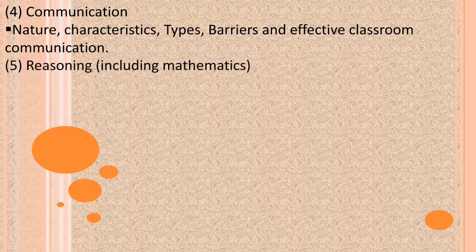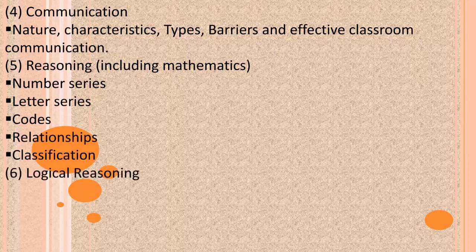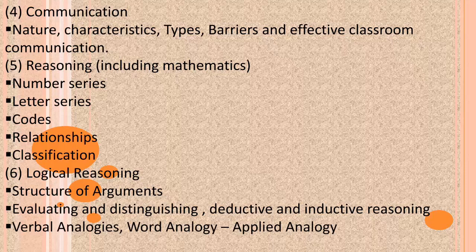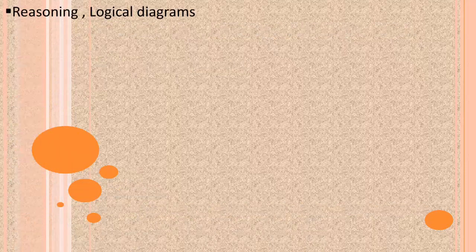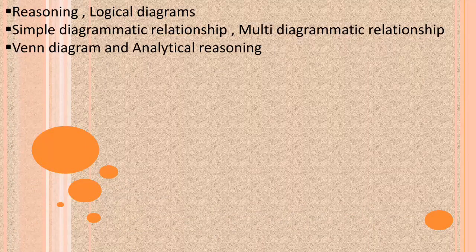Part 5 is Mathematical Reasoning, which includes number series, letter series, codes, relationships, and classification. Part 6 is Logical Reasoning, covering structure of arguments, evaluating and distinguishing deductive and inductive reasoning, verbal analogies, word analogy, applied analogy, verbal classification, logical diagrams, simple and multi-diagrammatic relationships, and Venn diagrams.